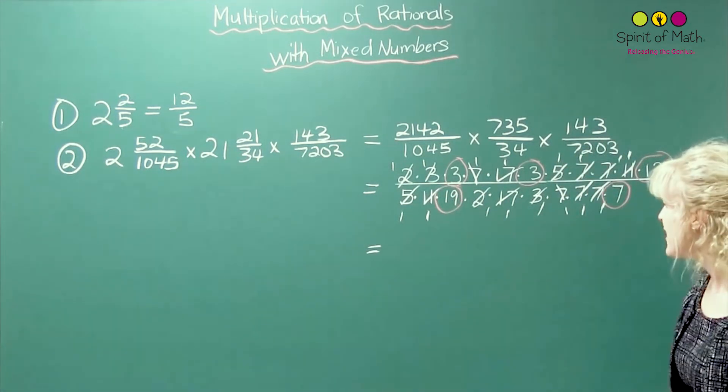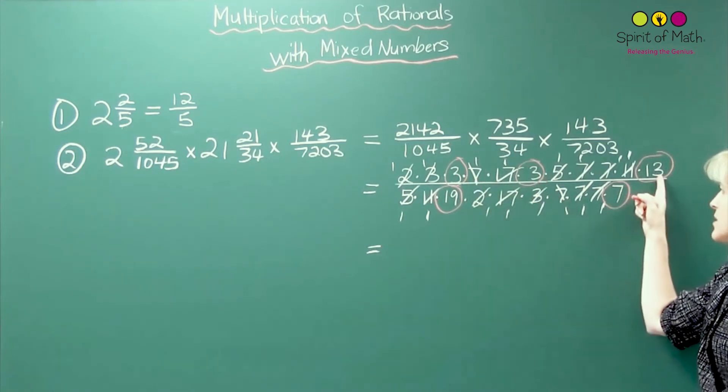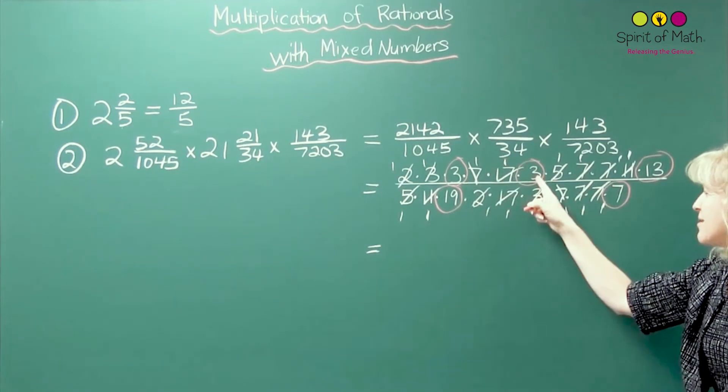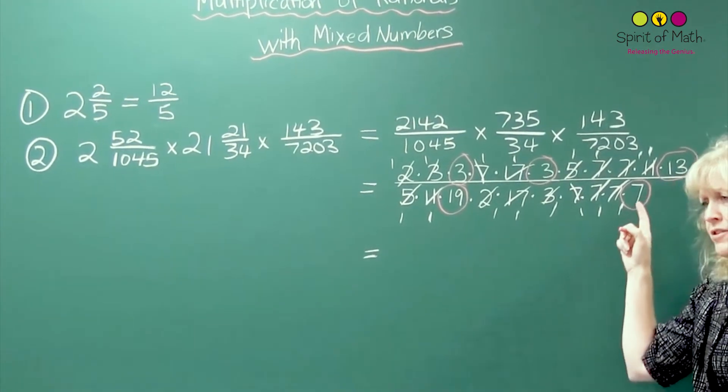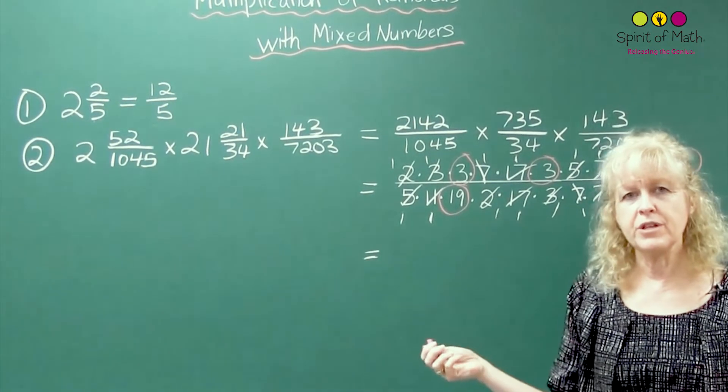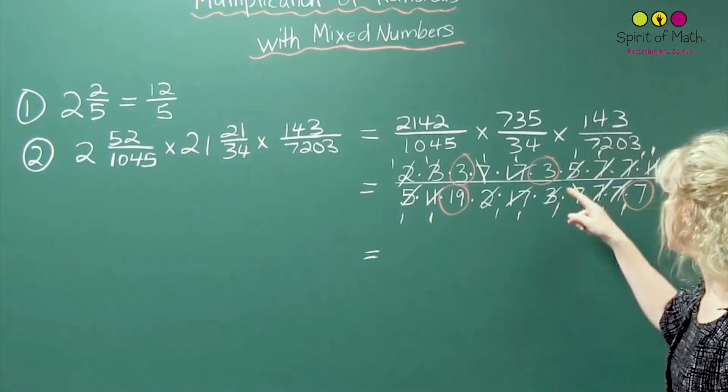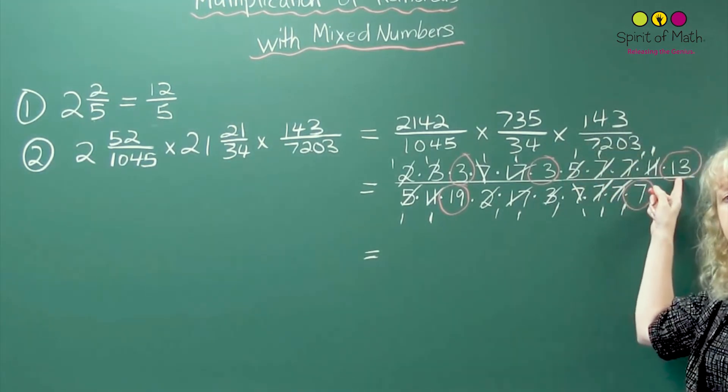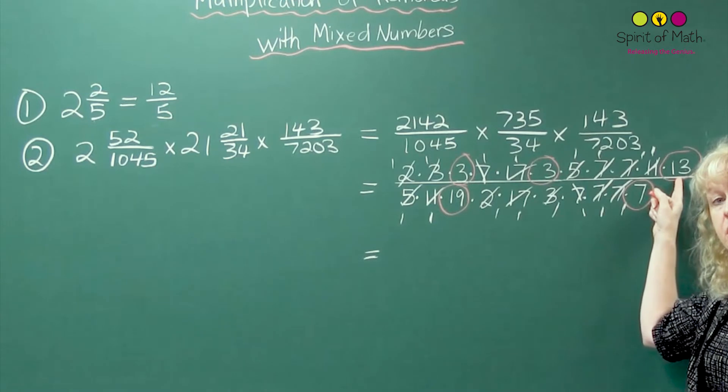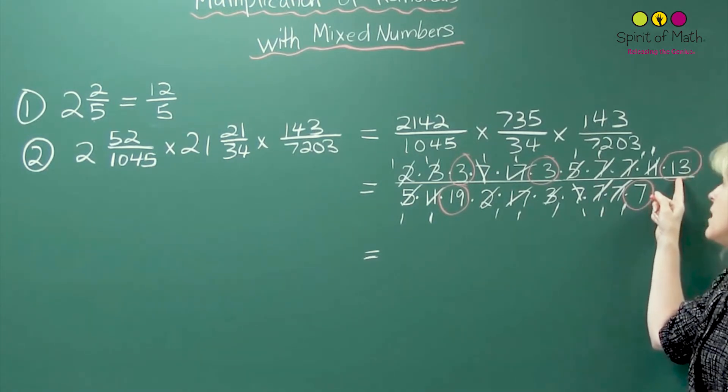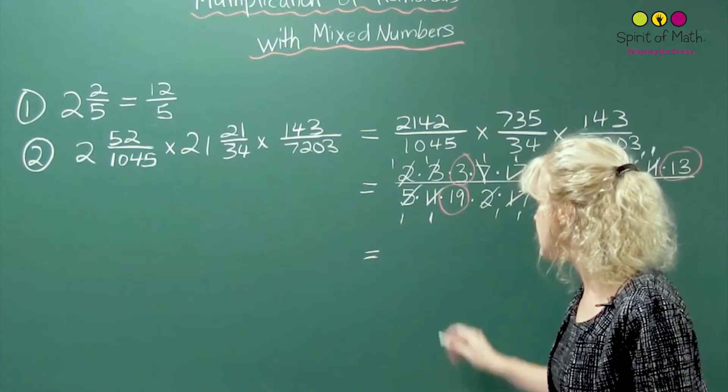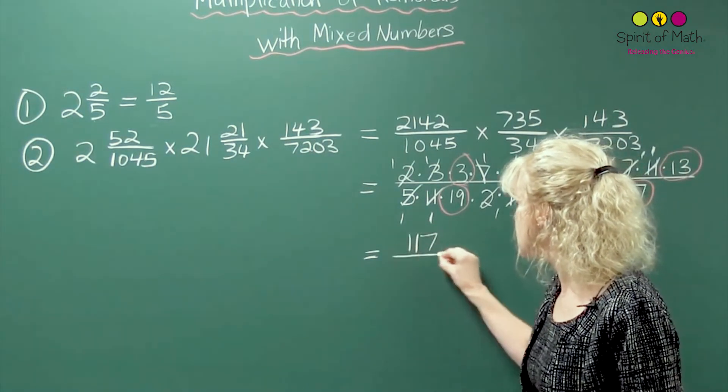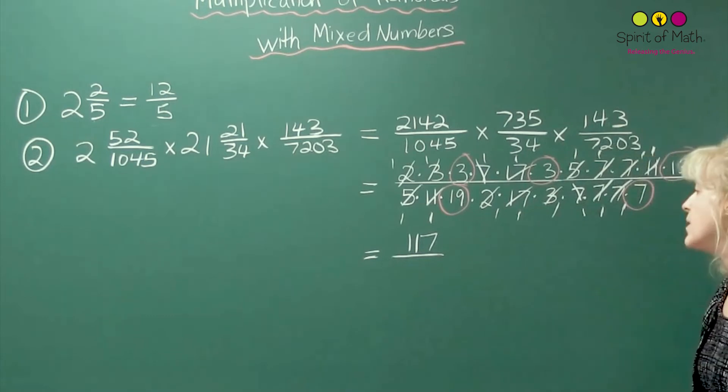Nice, all right, all you have to do is calculate. So 3 times 3 is 9, times 13. Well, 9 thirteens you may be able to do in your head, but if you're not too sure, you know that 10 thirteens is 130, and so 9 thirteens would be 13 less, so that would be 117. So 9 times 13 is 117.